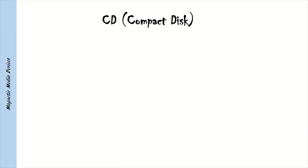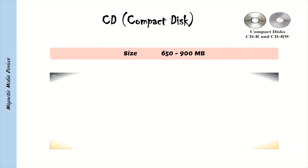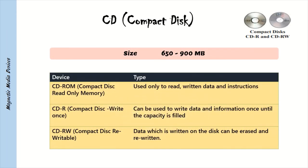CD (Compact Disk) types: CD-ROM (Compact Disk Read Only Memory) — used only to read written data and instructions. CD-R (Compact Disk Recordable) — can be used to write data and information once until the capacity is filled. CD-RW (Compact Disk Rewritable) — data written on the disk can be erased and rewritten.